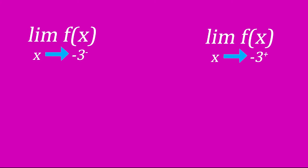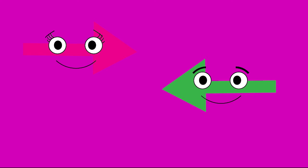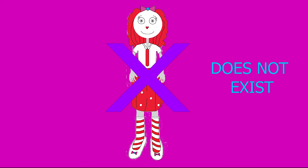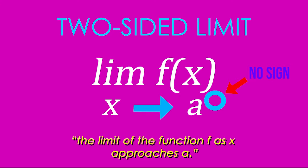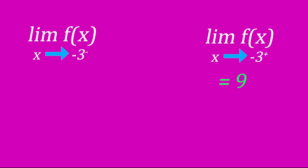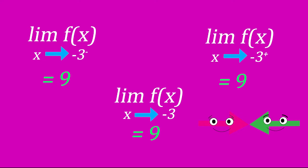Once the left-handed limit and the right-handed limit have the same values, then the actual limit — the two-sided limit — exists. The two one-sided limits are there to check if a limit exists; if they don't approach the same value, then the limit does not exist. If we talk of just the limit of f as x approaches a without any sign as its superscript, that is the two-sided limit, and its value is the same as both one-sided limits. Since both limits equal 9, the limit of f as x approaches negative 3 is equal to 9.